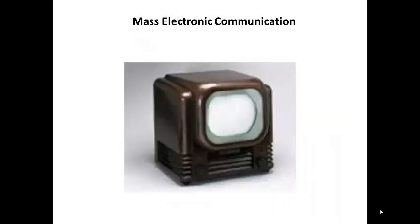In 1923, Vladimir Zworykin invented the first television cathode ray tube camera. In 1925, John Baird transmitted the first experimental television signal. Just like radio could transmit sound, television could transmit images with sound. In 1927, the first television was broadcast to the public in England, and in 1930 television came to the public in the United States.